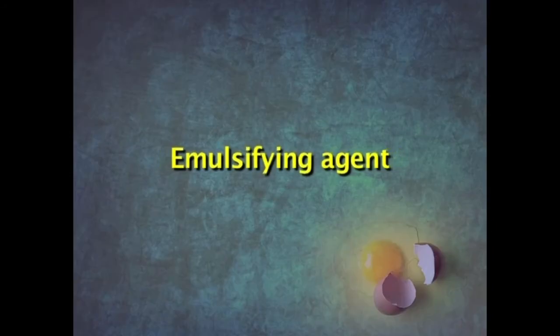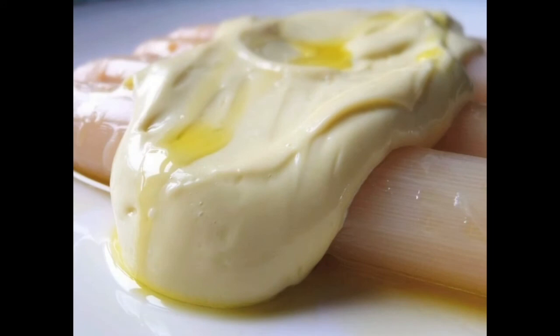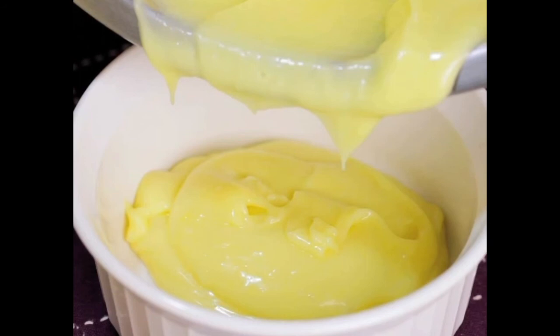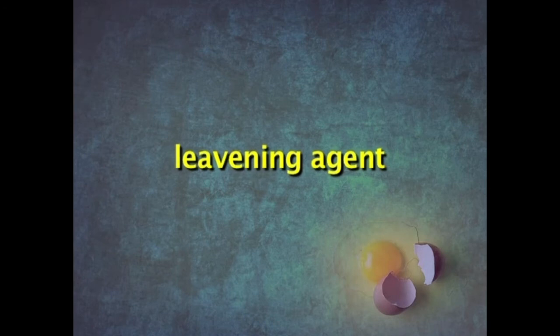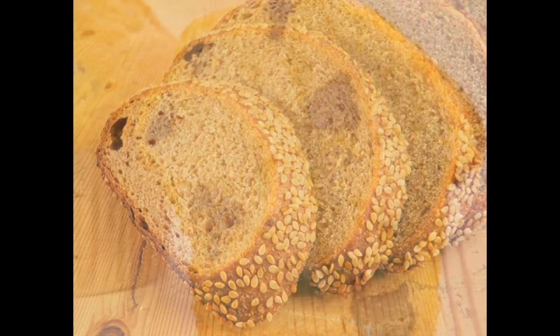Egg is also used as an emulsifying agent, for example in mayonnaise, a spread widely used for sandwiches and burgers. It consists of egg yolk beaten along with oil. The egg yolk forms a tiny film and traps air, giving a very smooth and creamy texture to the mayonnaise. Egg is also used as a leavening agent. When egg white is beaten, it foams and tiny air bubbles are trapped in the egg white film. When subjected to baking, it expands, trapping the air and giving the product a very airy and soft texture. Hence egg is used as a leavening agent in bread, cakes and cookies.